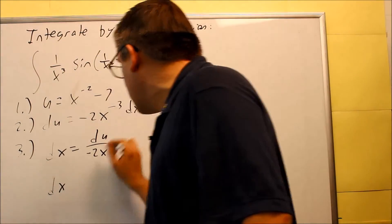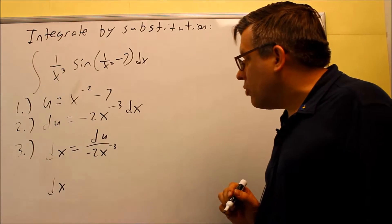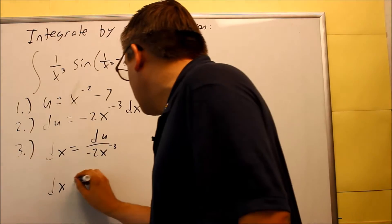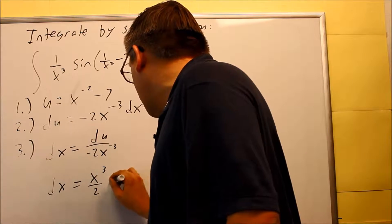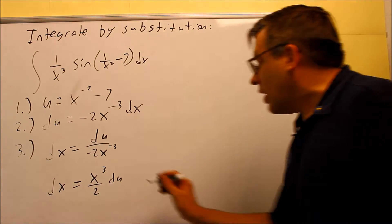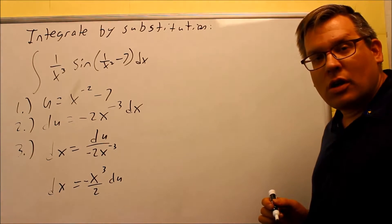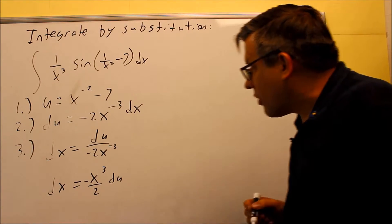And if you don't want to deal with a negative exponent again, what you can always do with that is you can move this up. So in this case, I have x to the third over 2, and then I have du on the end there, and then we have a negative out front. So this is how you can rewrite that without the negative exponent.